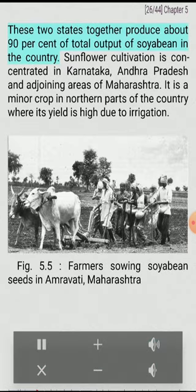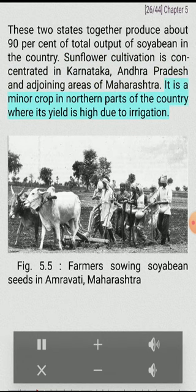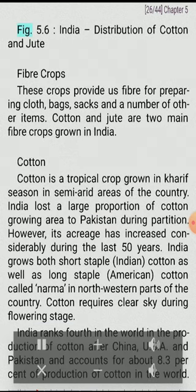Soybean and sunflower are other important oilseeds grown in India. Soybean is mostly grown in Madhya Pradesh and Maharashtra; these two states together produce about 90% of total soybean output in the country. Sunflower cultivation is concentrated in Karnataka, Andhra Pradesh, and adjoining areas of Maharashtra. It is a minor crop in northern parts of the country where its yield is high due to irrigation.